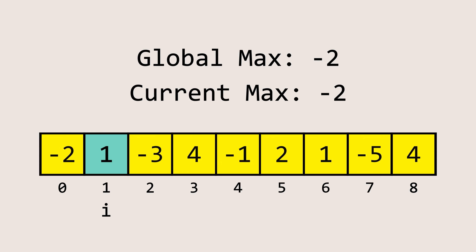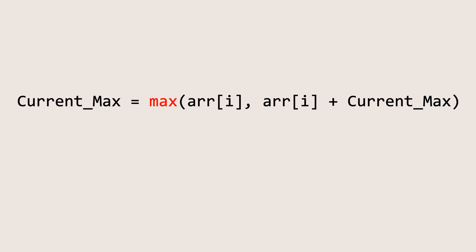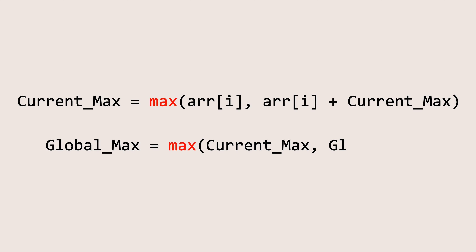Then, at each iteration, we need to update these two variables. First, we update the current maximum variable. Here, we take the maximum of either the value at the current index or the sum of the current index value and the current maximum value. Pause and think about it. Next, we update the global maximum value. This is done by taking the maximum of the current maximum and the global maximum. Again, pause and ponder.